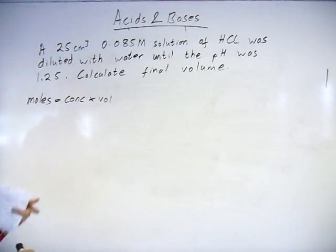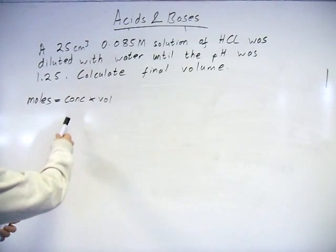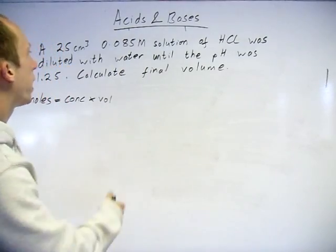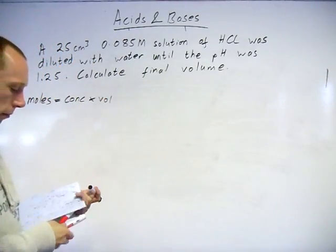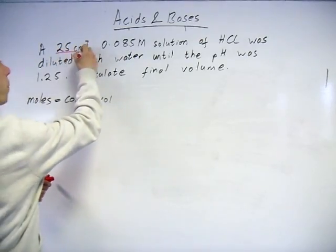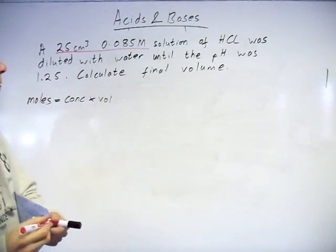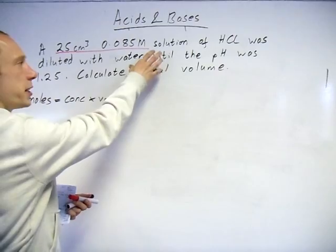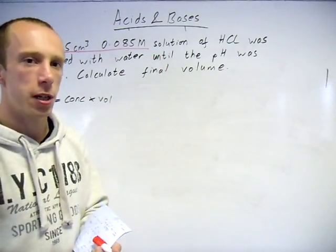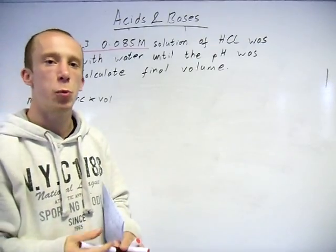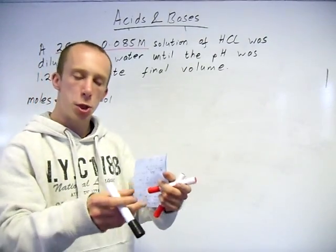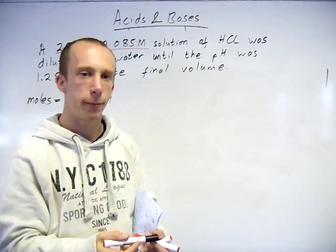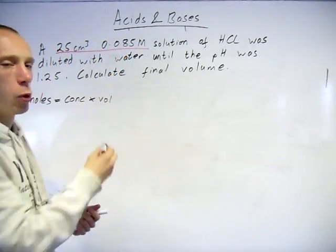That's the equation for working out volume. Obviously we need to know concentration and moles. We know the amount of moles of HCl in there because we've got 25 cubic centimeters of 0.085 molar. When we dilute something, we are not neutralizing it. The amount of H+ ions which was in there initially will still be in there at the end, just more spread out. We have not added a base to neutralize them.